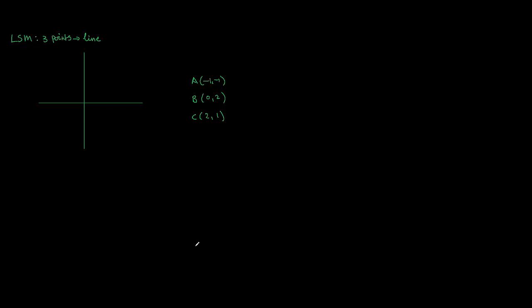In this least squares method we try to find a line best fitting through three points. We see three points given A, B and C and what is the best fitting line.